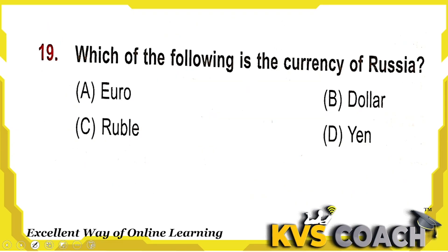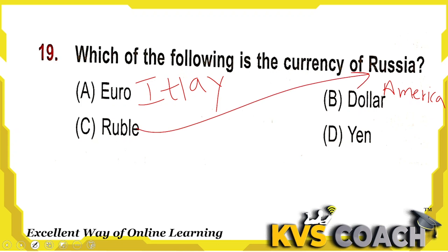Next: which of the following is the currency of Russia? Euro is the currency of Italy. Dollar is the currency of America. Ruble is the currency of Russia — option C is the right answer. Yen is the currency of Japan. So the right answer for this question is Ruble, option C.